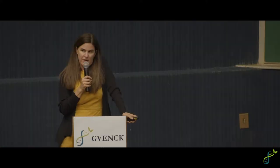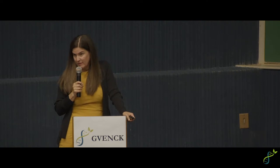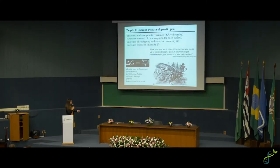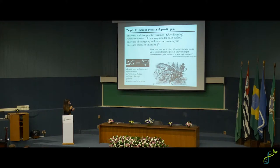I'm going to go over a bit of rationale for why a breeder might want to use UAS information in their breeding pipeline, around the framework of genetic gain. Genetic gain — the amount of increase in performance achieved through genetic improvement programs — can be expressed several ways. To improve the rate of gain, we can increase additive genetic variance, decrease cycle time, increase the accuracy of phenotyping and selection, and increase selection intensity.